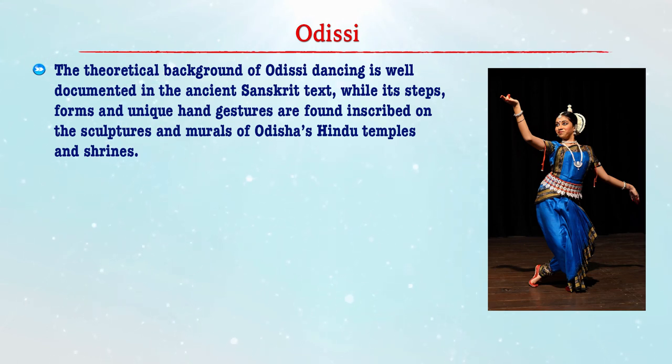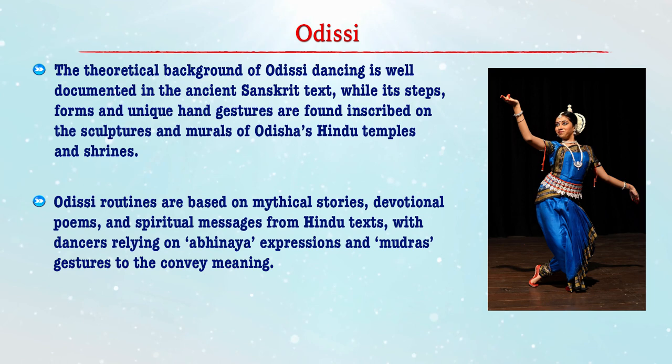Let us move to the last classical dance — Odissi. Based on archaeological evidence, Odissi is considered to be the oldest form of classical folk dancing in India. It finds its origin at the Hindu temples of Orissa on the eastern seaboard of India. The theoretical background of Odissi is well documented in ancient Sanskrit literature, with its steps, forms and unique hand gestures found inscribed on sculptures and murals of Orissan Hindu temples and shrines. Odissi is based on mythological stories, devotional poems and spiritual messages from Hindu texts, with dancers relying on abhinaya expression and mudra gestures to convey meaning.